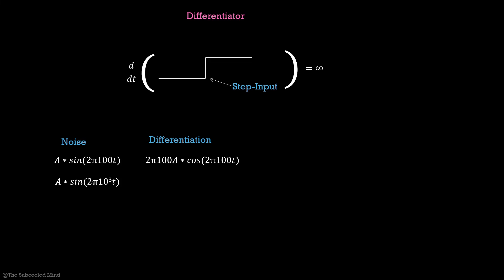So we get 2π*100*cos(2π*100t) and 2π*10,000*cos(2π*10,000t). We can clearly see that the high frequency signal will contribute much more to the differentiator term than the low frequency noise.